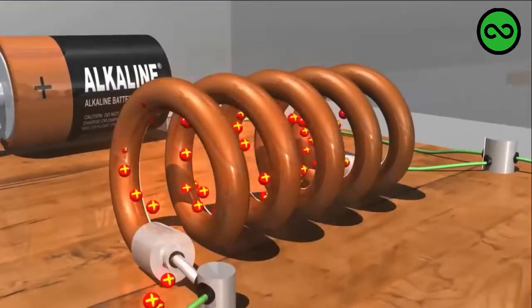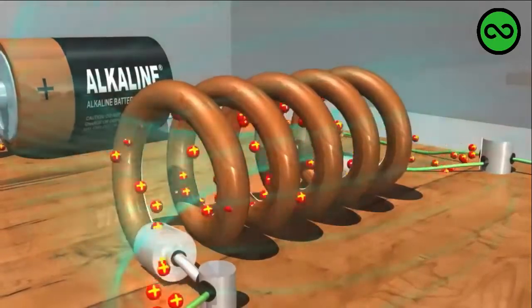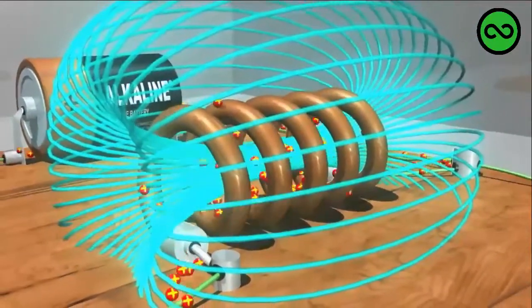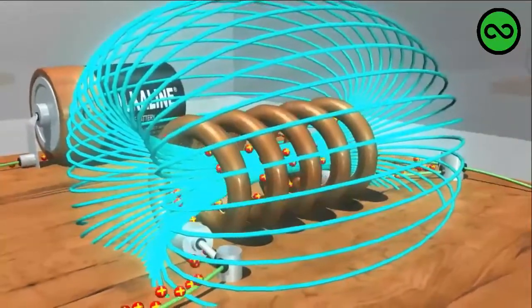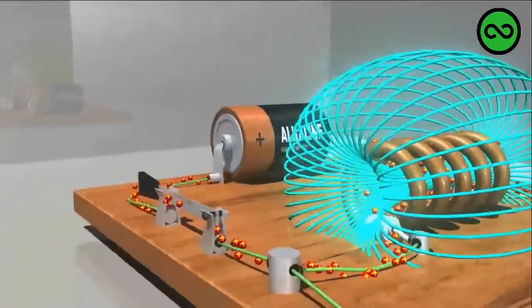They gradually build up to a maximum magnetic field that is much stronger than the one around the straight length of the wire. Let's watch this again, but this time we'll pay closer attention to what's happening in the wire conductor.